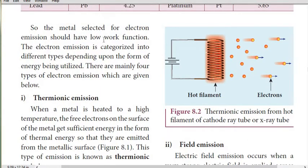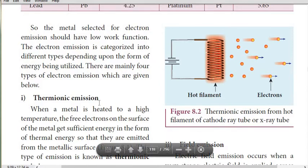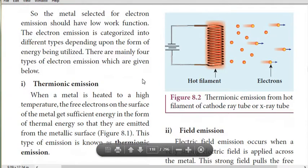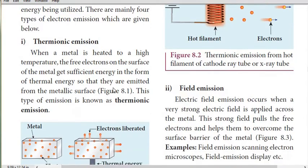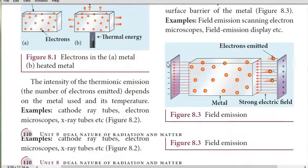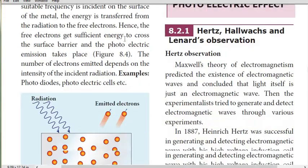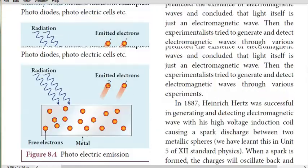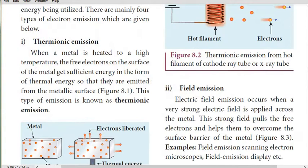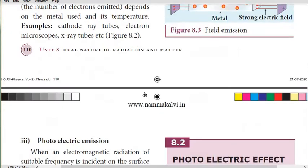The metal selected for electron emission should have a low work function. The electron emission is categorized into different types depending upon the form of energy being utilized. There are mainly four types of electron emission: thermionic emission, field emission, photoelectric emission, and secondary emission.